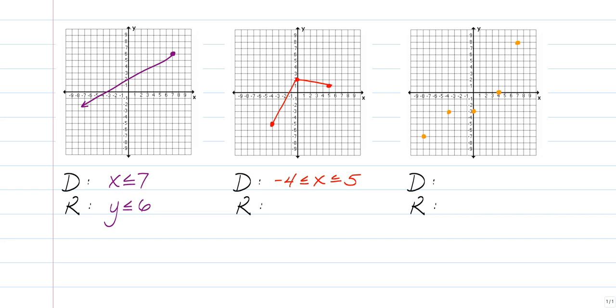We do the same thing for the y value. The smallest y value is a negative five. And our biggest y value is two. So if you said something like between negative five and two for the y values, then you would be correct.